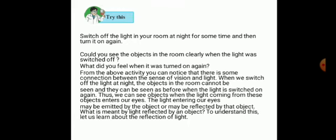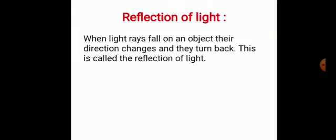When light rays fall on an object, their direction changes and they turn back. When they reach our eyes, the objects are visible. So what is reflection of light? When light rays fall on an object, their direction changes and they turn back. This is called the reflection of light.